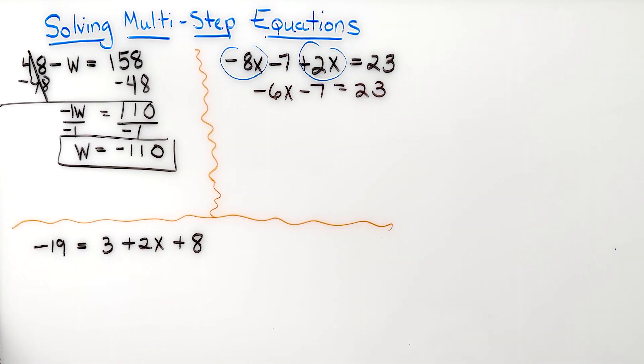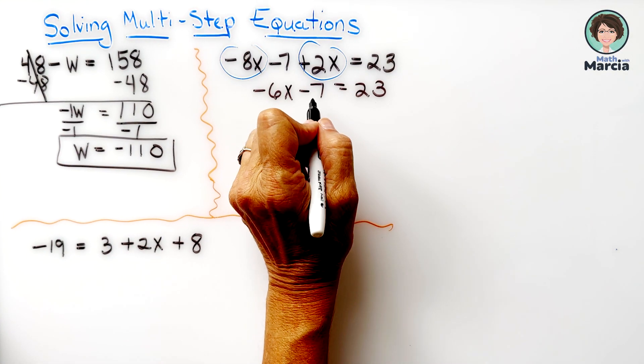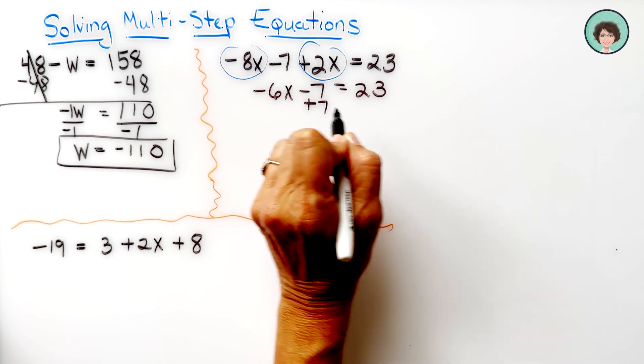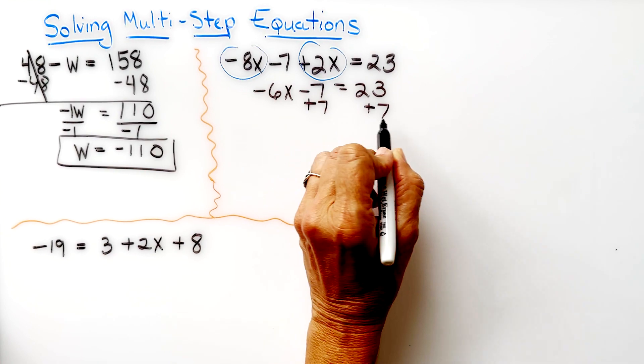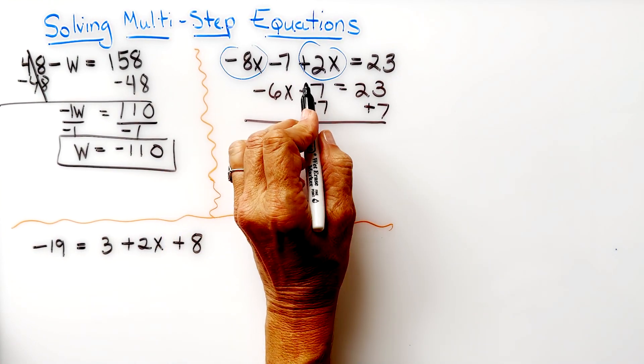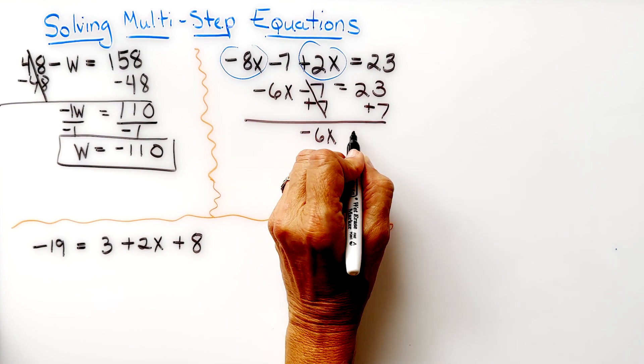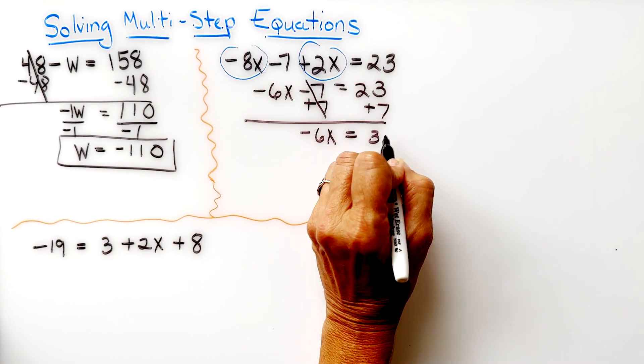The x needs to be by itself, so this minus 7 is like a negative 7, so I'm going to add 7 to both sides. That cancels out and we end up with negative 6x equals 30.